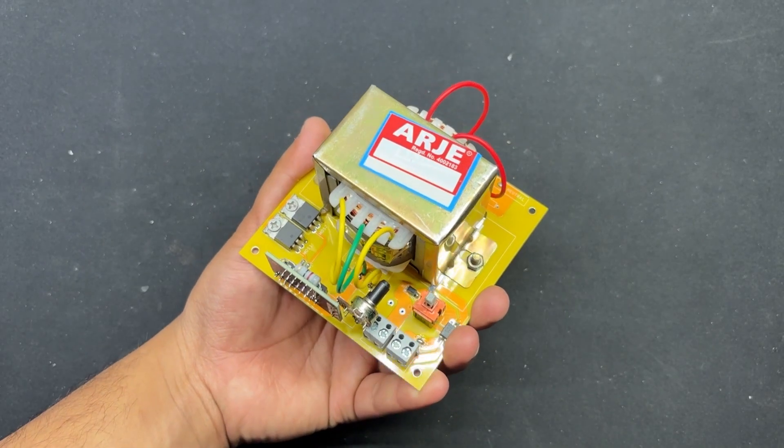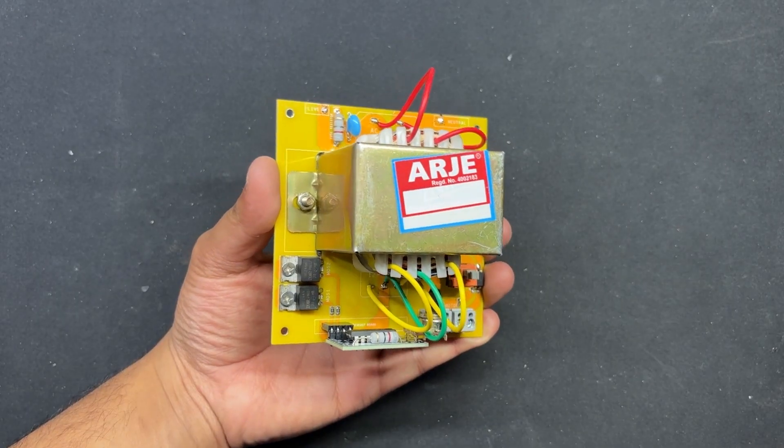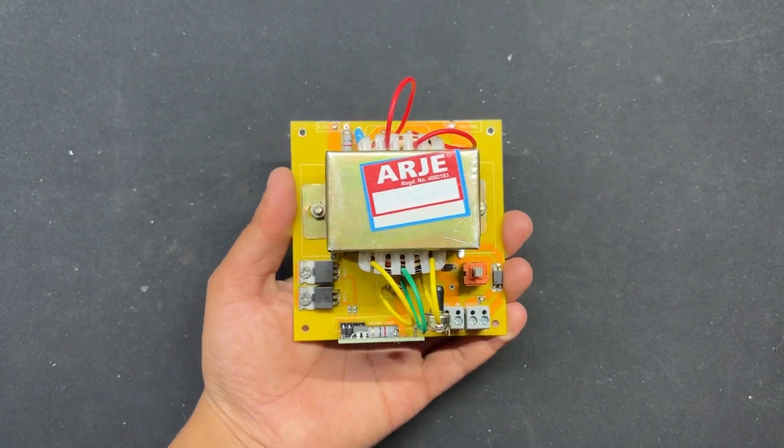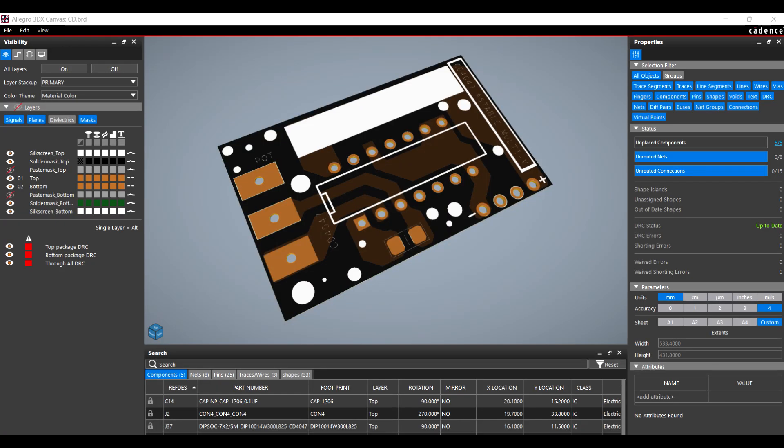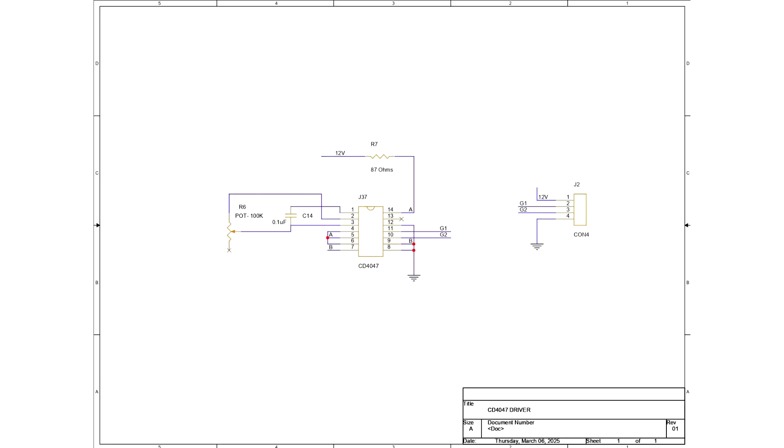We begin this project by designing the PCB, which consisted of two primary sections for modularity: the CD4047 driver section with a CD4047 IC, potentiometer, and load resistance that generates square wave pulses adjustable via the potentiometer, typically set to 50Hz or 60Hz.